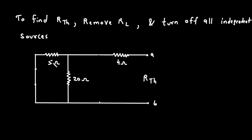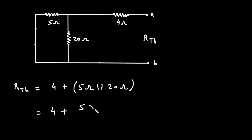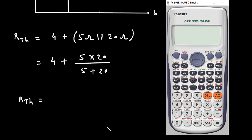Now here we can clearly see this 5 ohm and 20 ohm — these are connected in parallel, and it is in series with 4 ohm. So therefore RTH is equal to 4 ohm plus 5 ohm parallel with 20 ohm. So 4 plus (5 × 20) divided by (5 + 20), which gives RTH equal to 8 ohm.